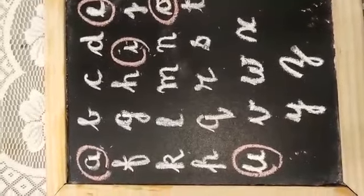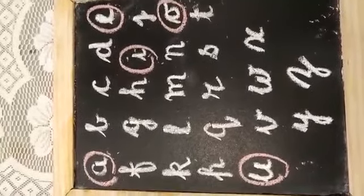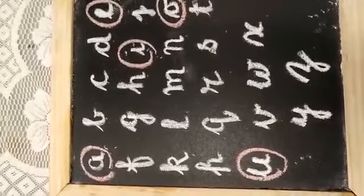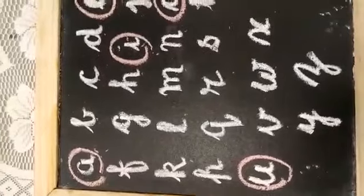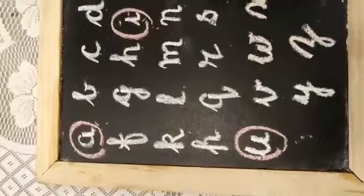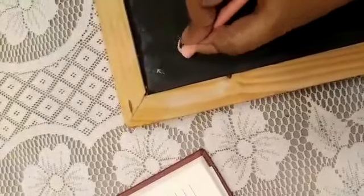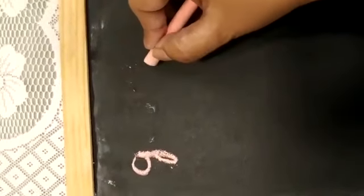Now, what are blends? Blends are when we join two consonants. Let's take two consonants: G and L.